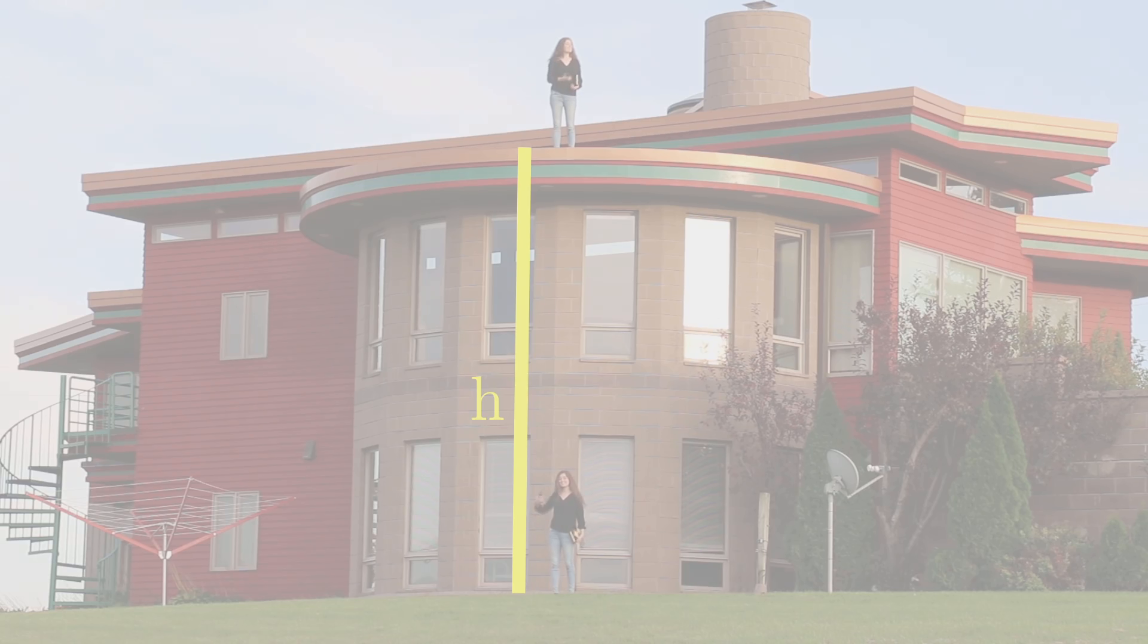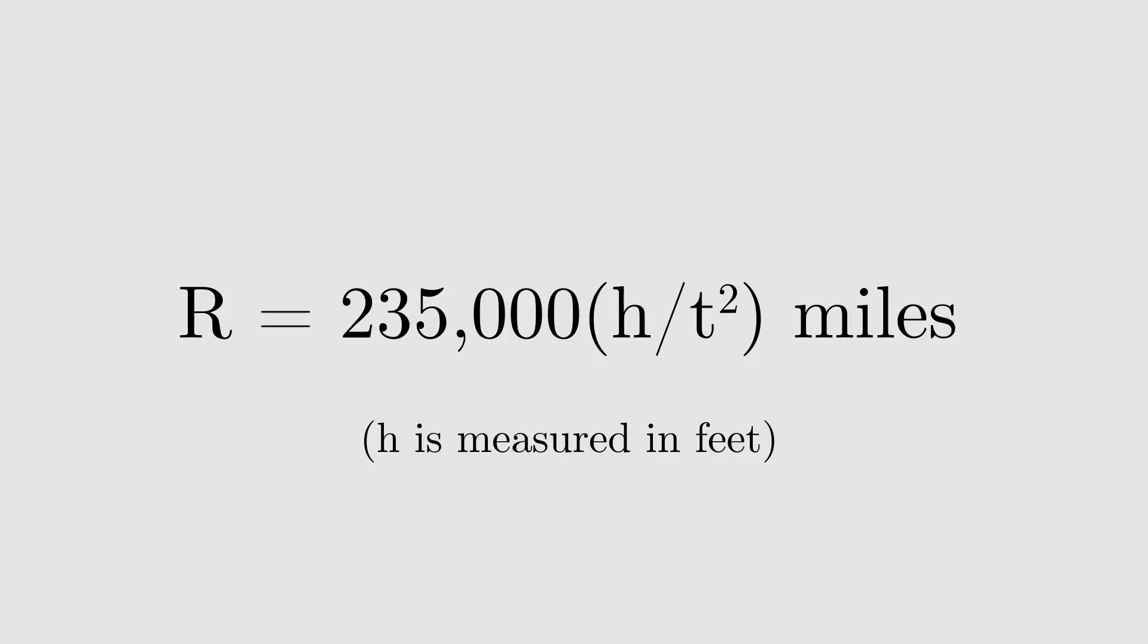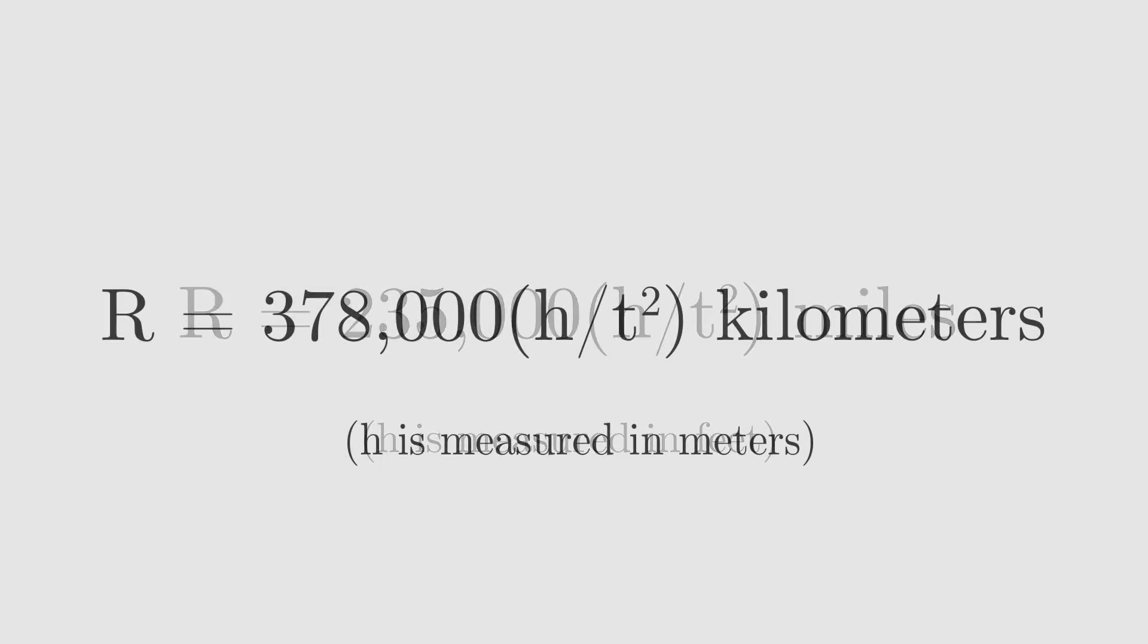Now you have all the data you need. This expression gives the radius of the Earth in miles if h is measured in feet. Or this formula gives the radius in kilometers if h is measured in meters.